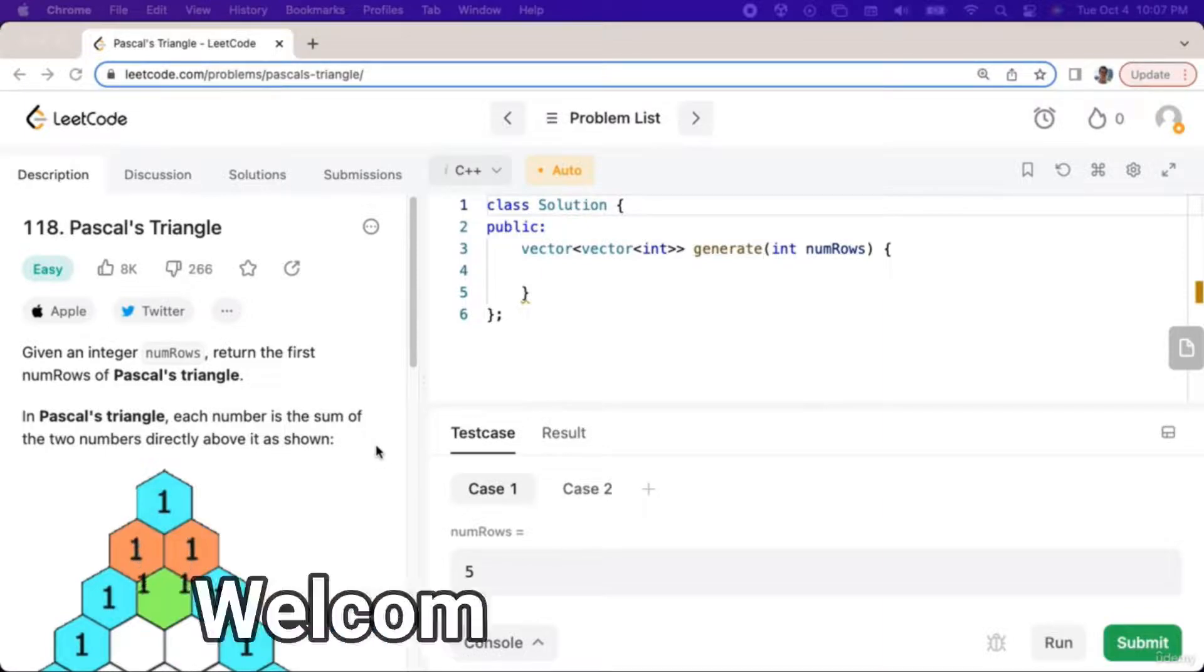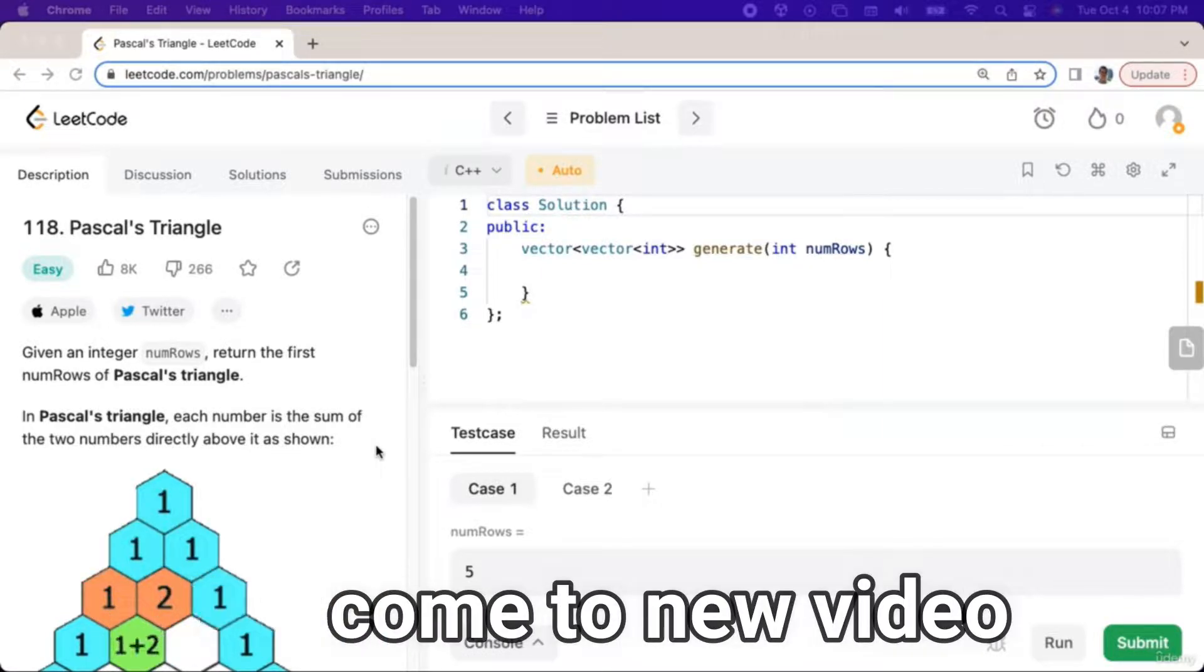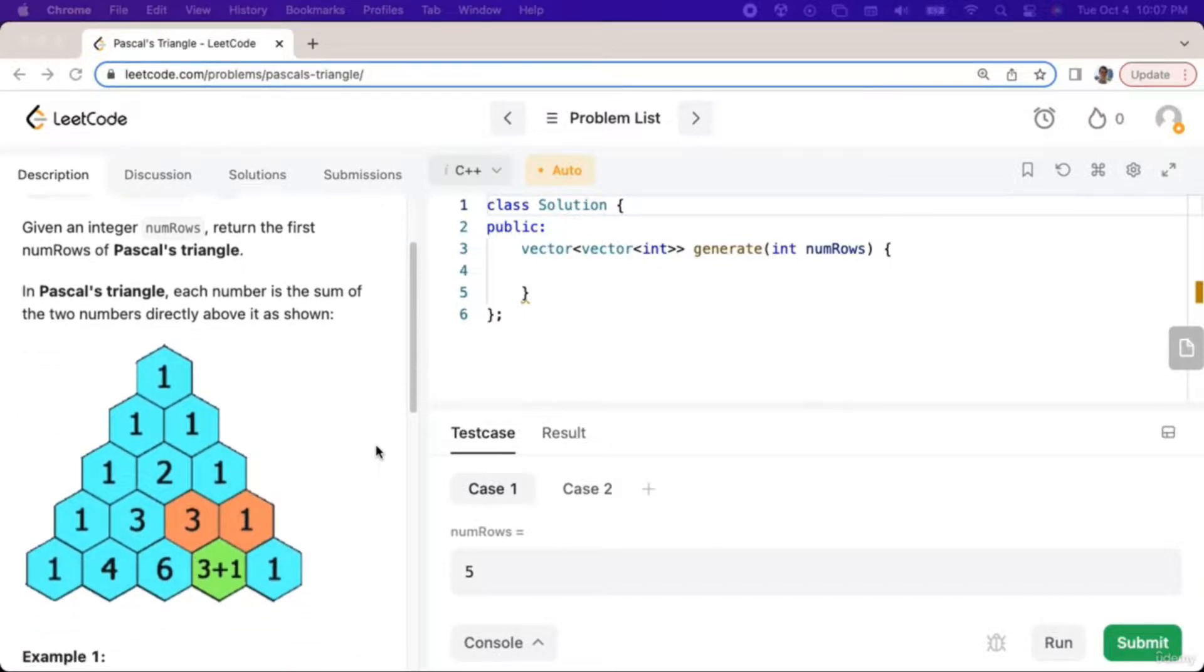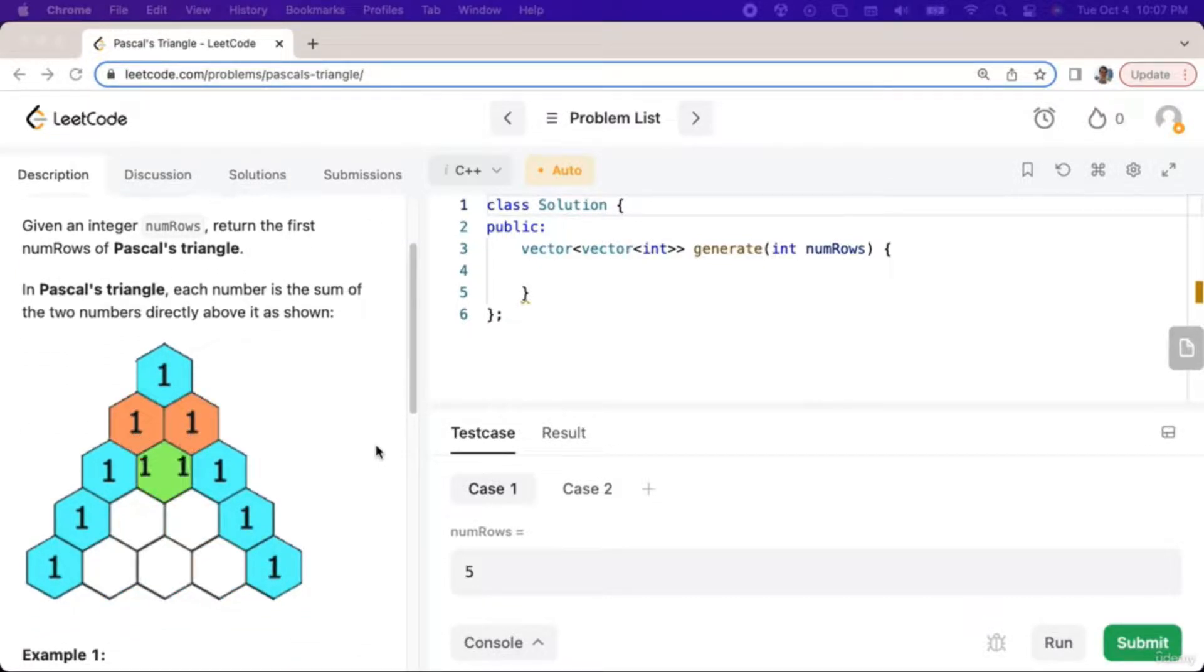In this video, we will discuss the Pascal's Triangle problem and plan out an algorithm to solve it. Given an integer numRows, return the first numRows of Pascal's Triangle.